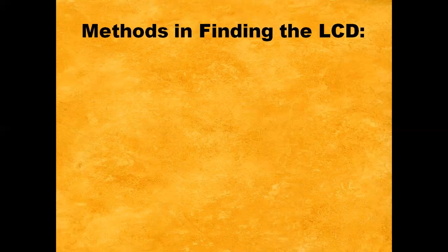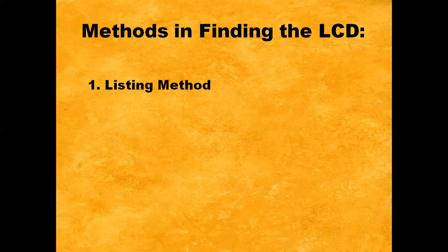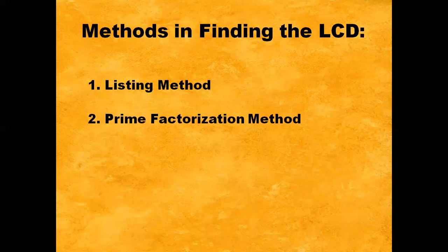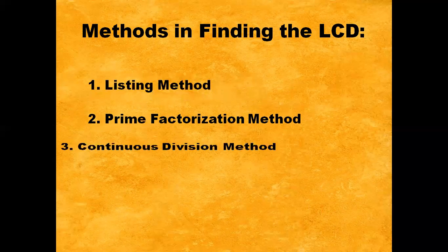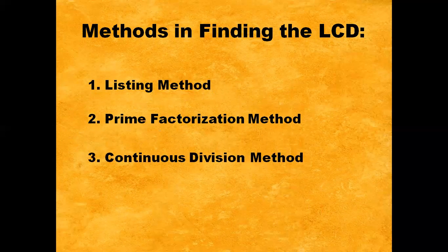What are the methods in finding the LCD or the Least Common Denominator? First, we have the Listing Method. Second, we have the Prime Factorization Method. And third, we have the Continuous Division Method.